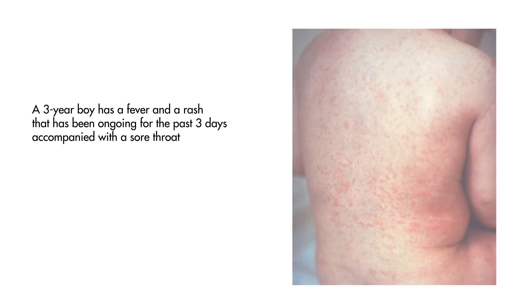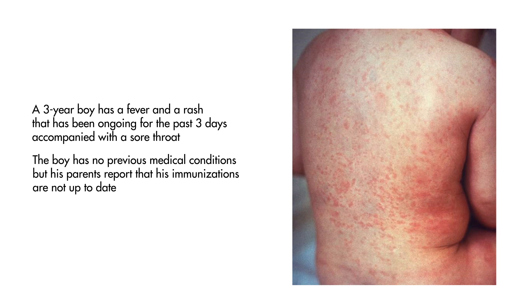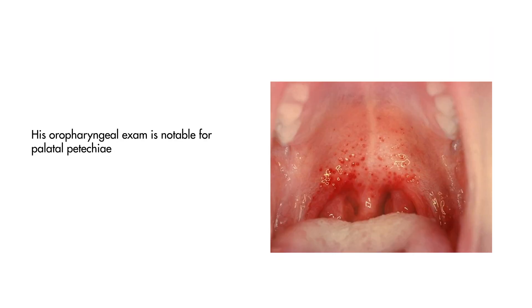A three-year-old boy has a fever and a rash that has been ongoing for the past three days, accompanied by a sore throat. The boy has no previous medical conditions, but his parents report that his immunizations are not up to date. On exam, he has suboccipital lymphadenopathy, a maculopapular rash seen here, which also involves his entire torso and face. His oropharyngeal exam is notable for palatal petechiae seen here. What is the likely diagnosis?